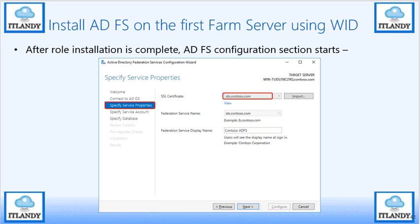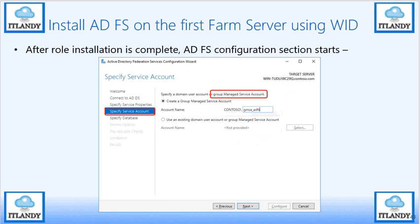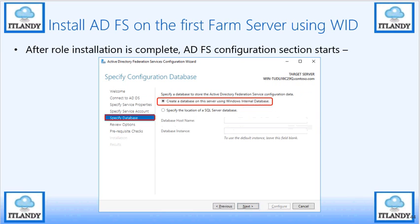Specify the server name. If you're going to use GMSA, specify the name. Next, you need to create a database — either using SQL or Windows Internal Database. We're going to use Windows Internal Database rather than SQL. If you use SQL, you need to specify the instance name and the hostname.